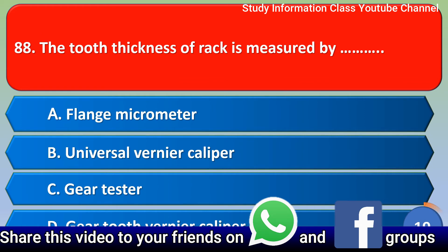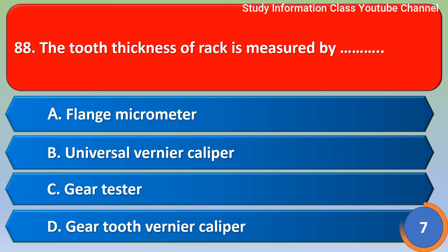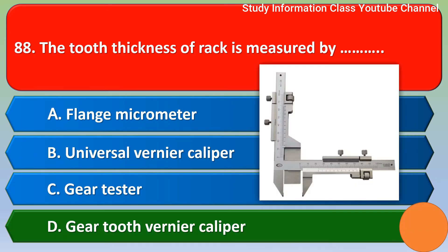Next question: The tooth thickness of a rack is measured by: flange micrometer, universal vernier caliper, gear tester, or gear tooth vernier caliper. The correct answer is option D, gear tooth vernier caliper.